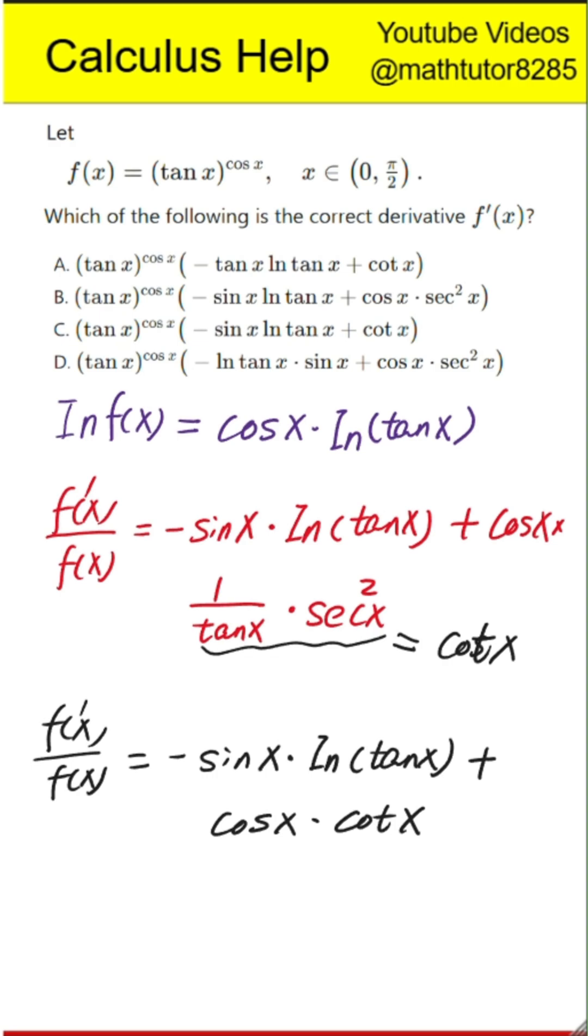After that, next step is to multiply back by f of x. Multiplying both sides by f of x gives f prime of x equals tangent x to the power cosine x multiplied by the expression in parentheses, which is negative sine x times natural log of tangent x plus cosine x times cotangent x.